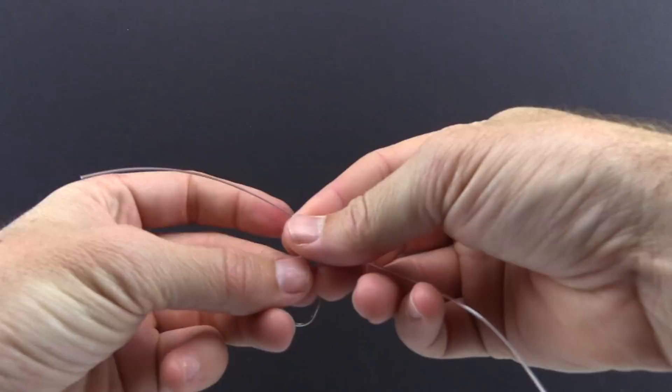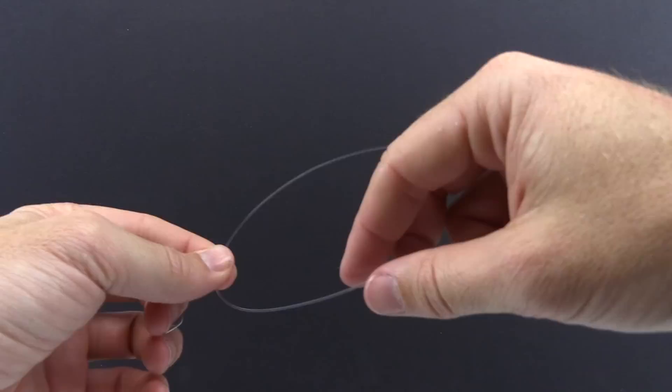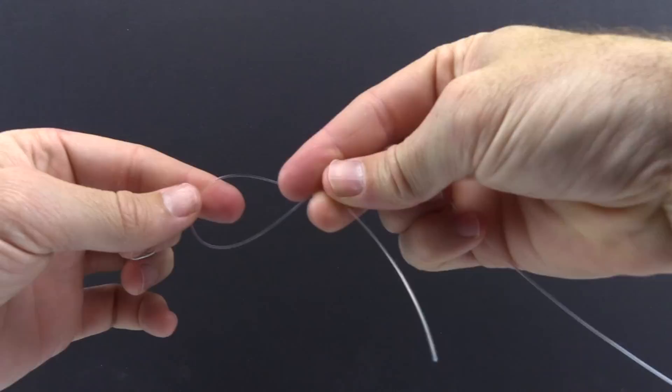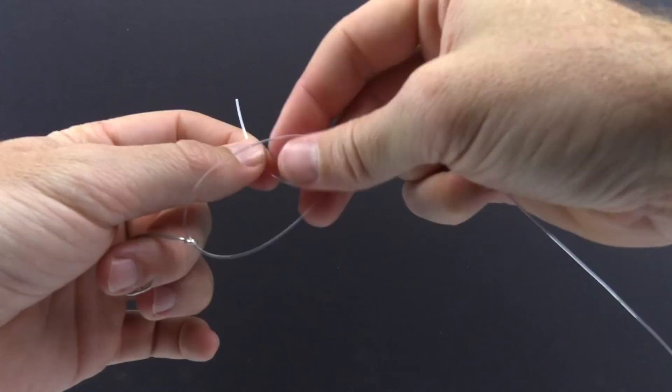The first step is just to take the line through the hook and then get maybe four inches or so of tag end heading out to the right. We're going to take the tag end back behind the main line and that really just formed a loop. Now coming from again around the main line we're going to go from the front through that loop toward the back.